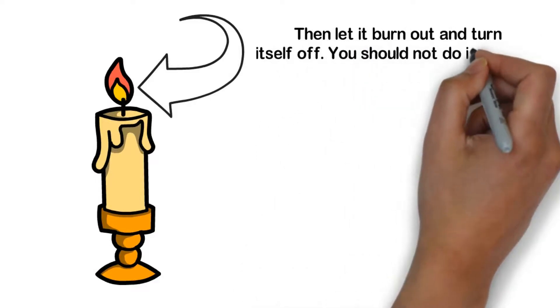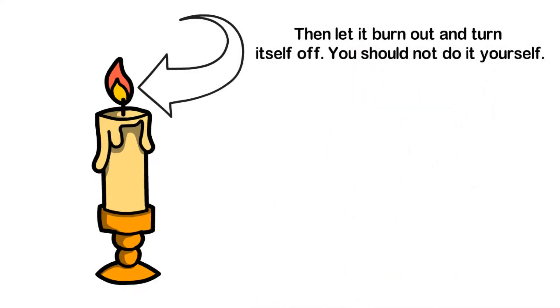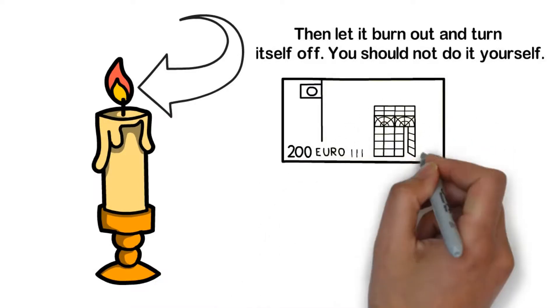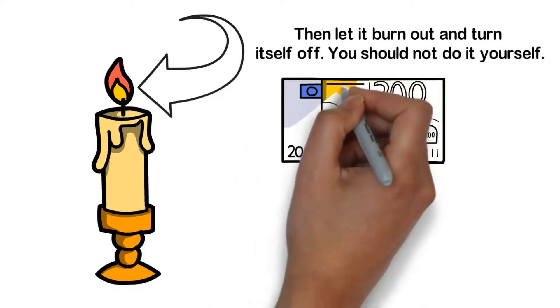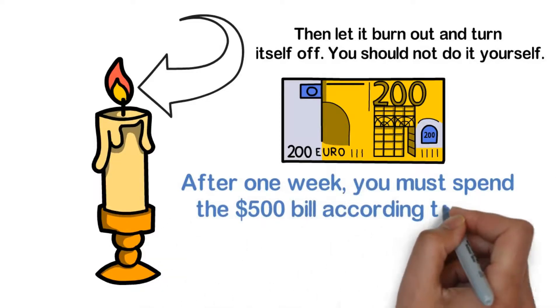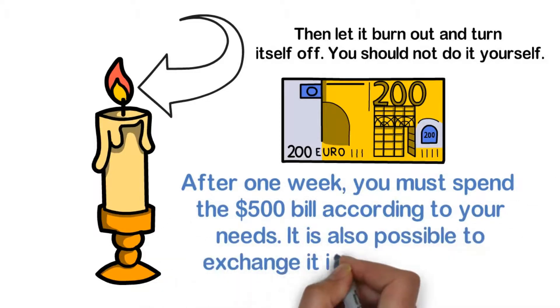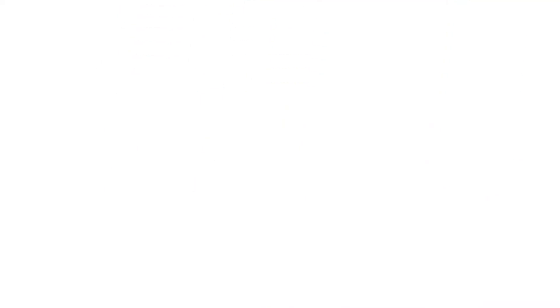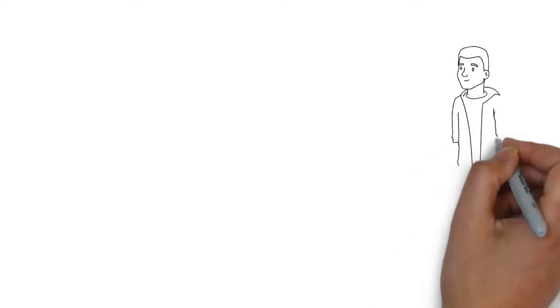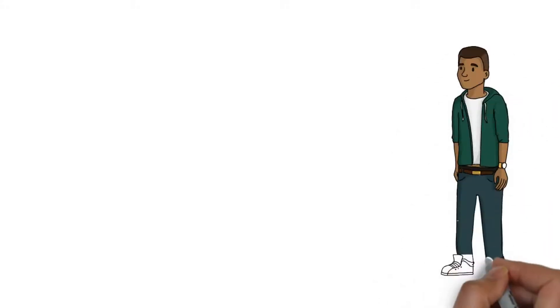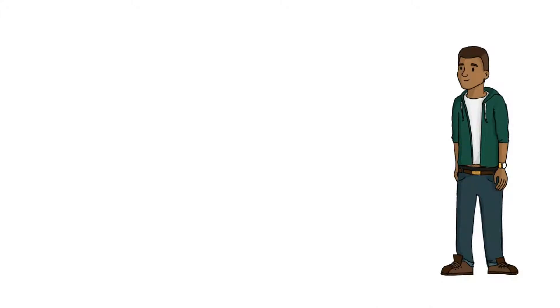The next day, put the magnetized banknote and the last clove in the magnetized envelope. Place them in a safe place so that no one can see or touch them. After one week, you must spend the 500 bill according to your needs. It is also possible to exchange it if you don't want to spend it all at once. After the ritual, if you have followed the instructions, the magnetized ticket will attract many others. Your money problems will then end because the odds will be on your side.